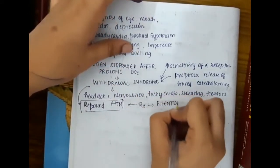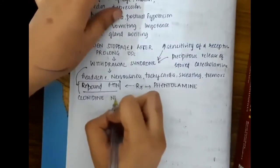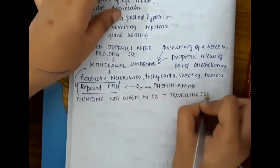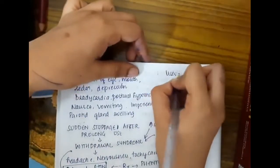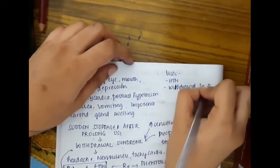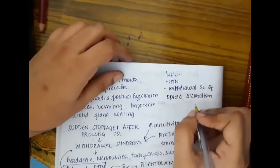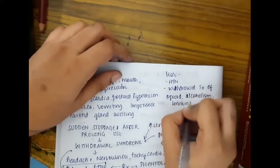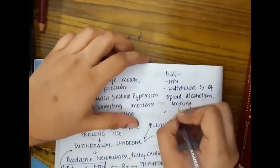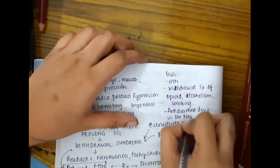For the treatment of rebound hypertension, the drug phentolamine can be used. Clonidine is not given in patients with travelling jobs. Uses of clonidine include hypertension, withdrawal symptoms of opioids, alcoholism or smoking, and it can be used as an anti-diarrheal drug in diabetes mellitus neuropathy.